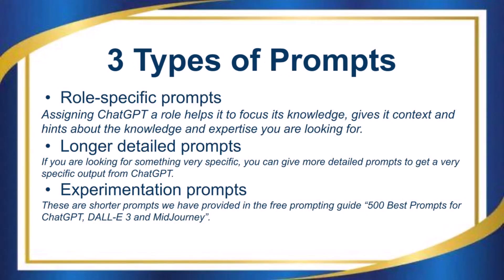We can also talk about three different types of prompts. These are also aligned, by the way, with the free bonus you get with the book, which is the 500 best prompts for ChatGPT, DALL-E 3, and Midjourney. There are role-specific prompts, which basically assign ChatGPT a role and help it focus its knowledge, give it context, and generally it's a great technique to help you get better outputs. Then you can have longer detailed prompts — if you want something very specific, make a very specific prompt. Give details and it's more likely you're going to get them. Then there are experimentation prompts, which are prompts in a free PDF so you can play around to see how changing part of your prompt will often give you a very different output.